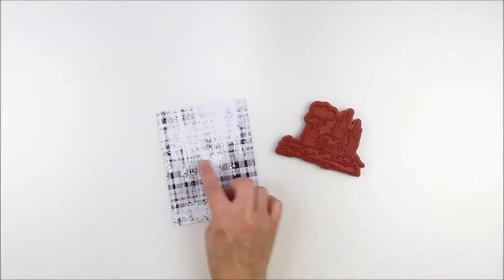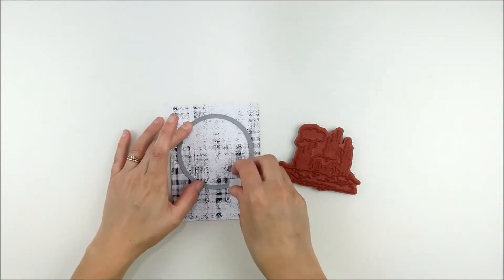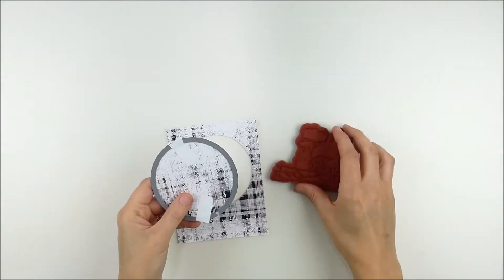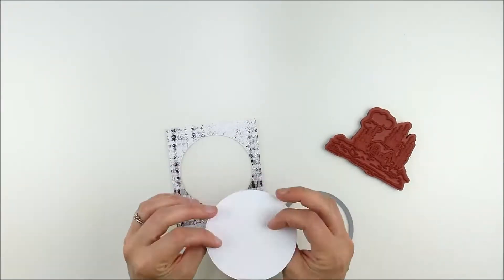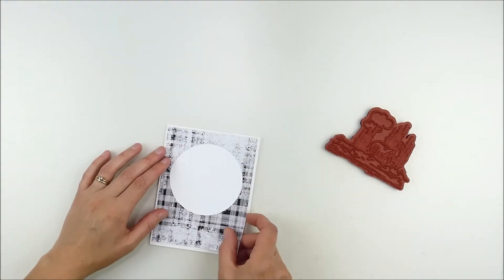We're also going to combine it with a little bit of Unity Stamp Company's new 6x6 pattern papers. This is from the Rustic Textiles pattern paper and I just used a round stitched metal die to die cut a circle out of the center of that panel.